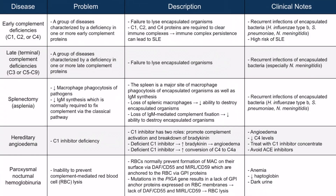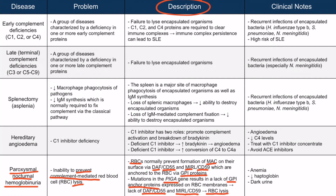Paroxysmal nocturnal hemoglobinuria is caused by an inability to prevent complement-mediated red blood cell lysis. Red blood cells normally prevent formation of MAC on their surface through DAF, also called CD55, and MERL, also called CD59. Both proteins are anchored to the surface of the red blood cell through GPI proteins. When there's a mutation in the PIG-A gene, this results in a lack of GPI anchor proteins, meaning there's nothing to hold DAF or MERL to the red blood cell surface, so complement on the red blood cell surface goes unregulated and the red blood cells lyse, ultimately resulting in anemia, decreased haptoglobin, and dark urine.